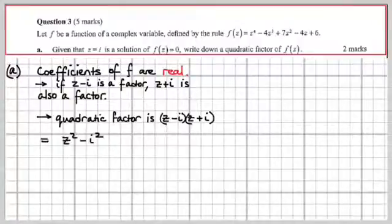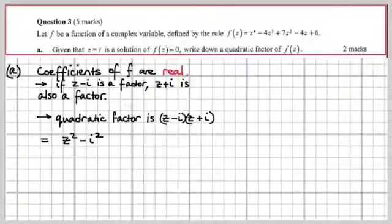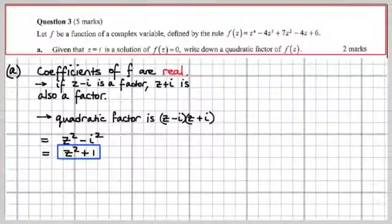Therefore the quadratic factor is (z − i)(z + i) = z² − i². Since i² = −1, we get z² + 1. That's our answer.